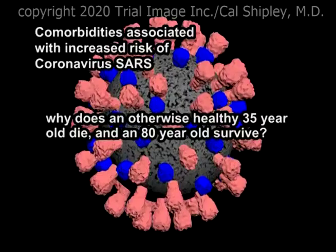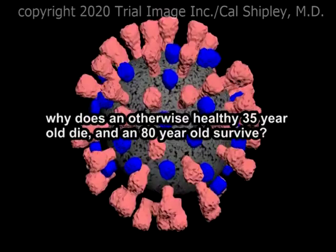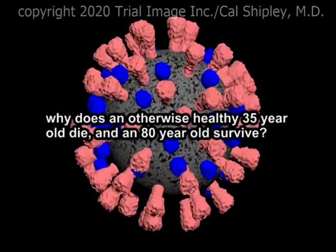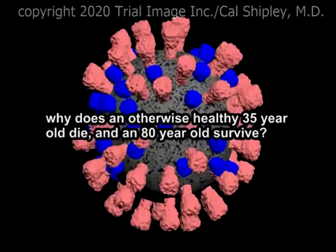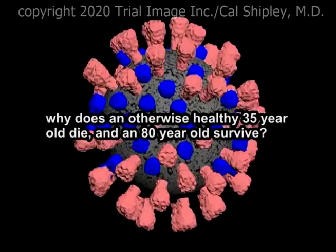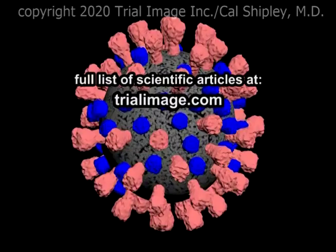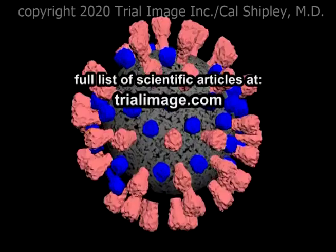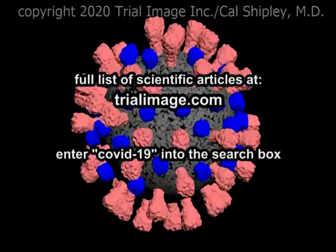What about the 35-year-old otherwise healthy individual who dies of SARS from COVID-19 infection, or the 80-year-old who only develops mild disease? These cases are unexplainable given our current state of knowledge. The overwhelming odds are that these are not simply fluke events, and that they have a scientific explanation — if only we can find it, or perhaps I should say, when we find it. You can find a full list of the scientific papers I referred to in producing this presentation at my website, trialimage.com. Please enter COVID-19 into the search box on the homepage. In the meantime, please be safe and stay well.